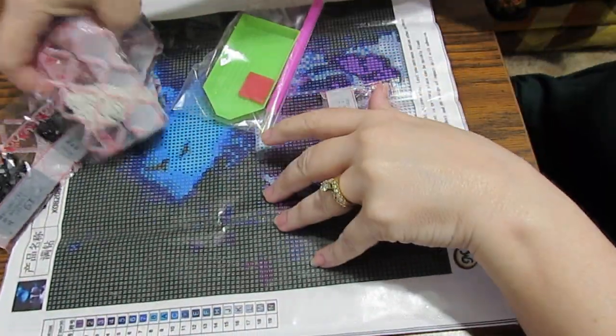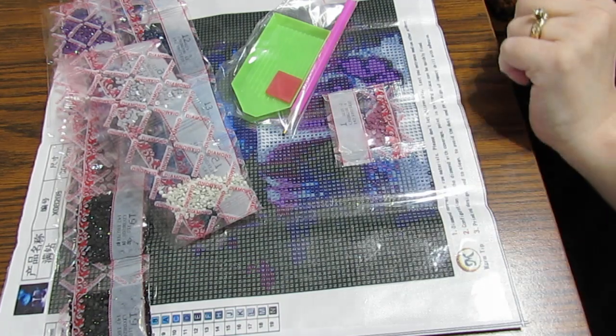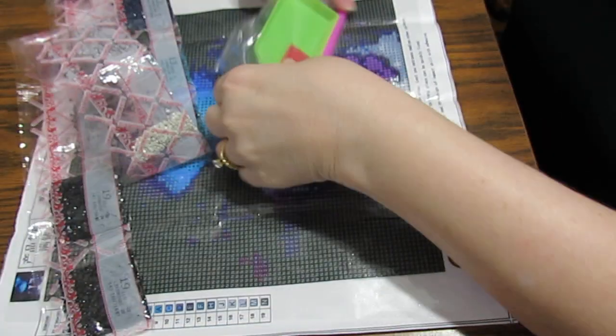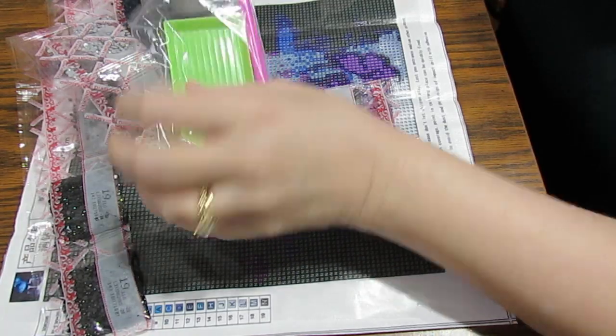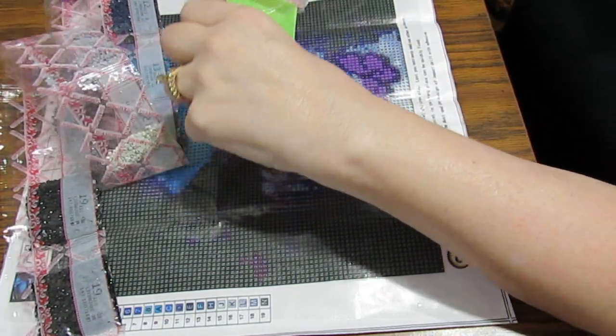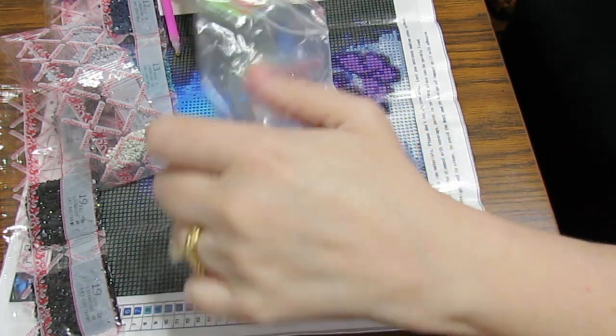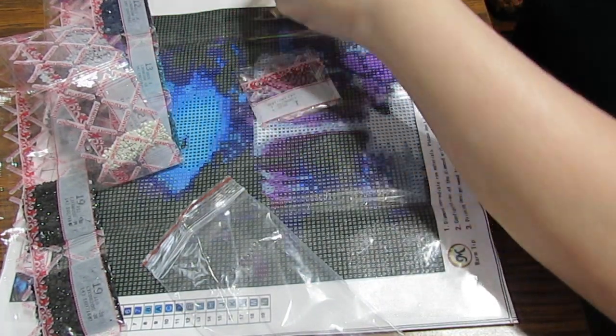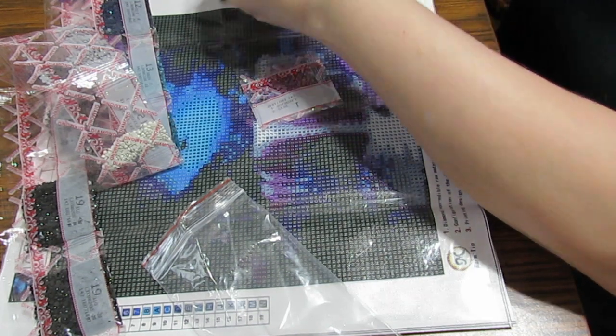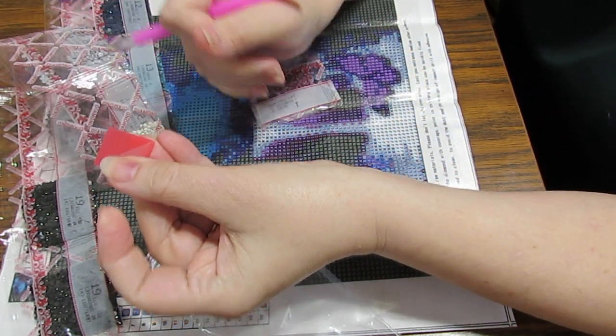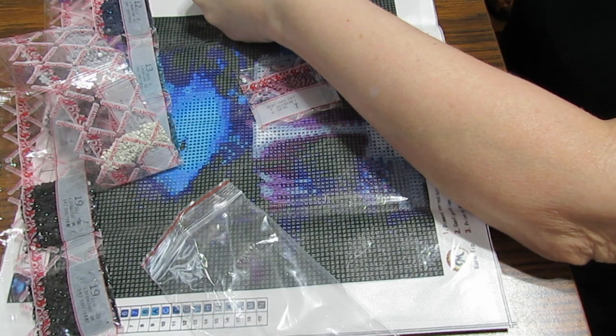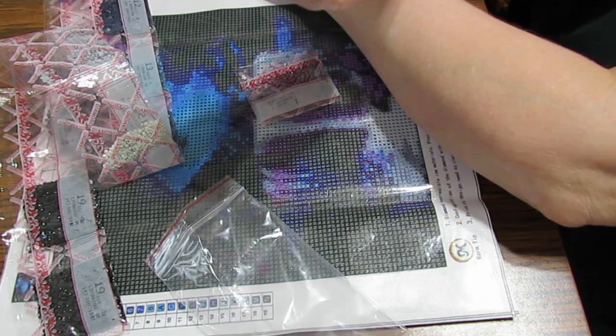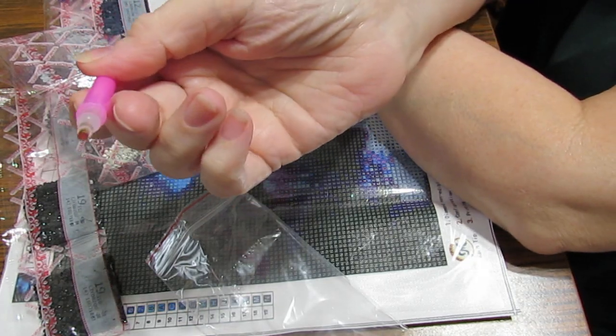You don't have to have a lot of fancy equipment. You just need to have your diamonds, your kit, because this is how you're going to pick your diamonds up is with this wax. There's a piece of paper you peel it back and I usually push it in there a couple of times to get my pen filled with some wax.